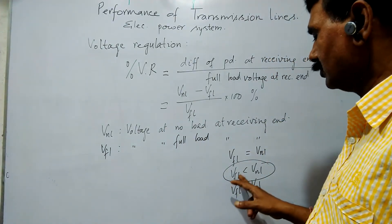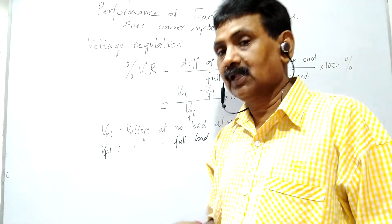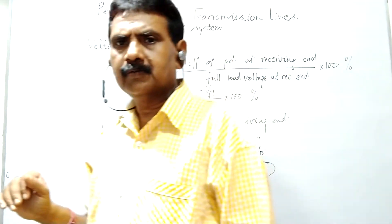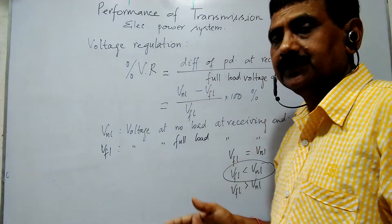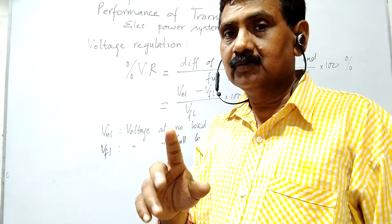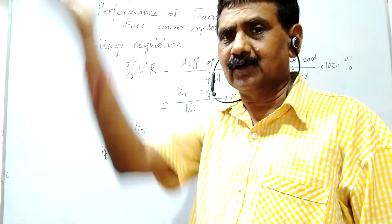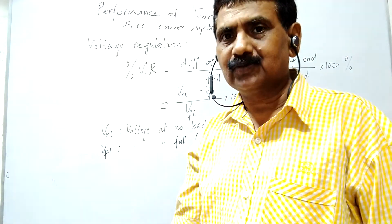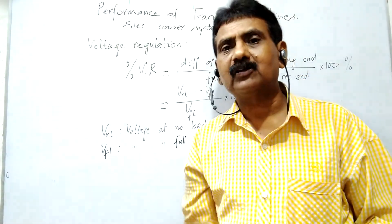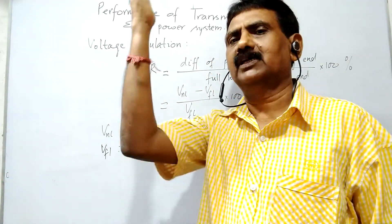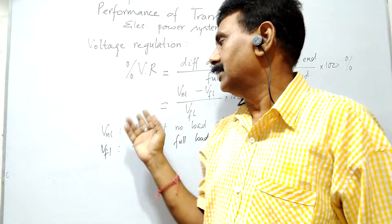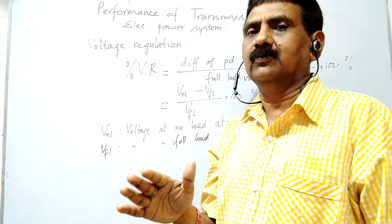V full load should always be less than VNL for inductive loads. If voltage fluctuates more than the rated value, that is harmful for our electrical devices — it causes loss or damage. Therefore, voltage regulation should have less value — a lower percentage voltage regulation means better performance.